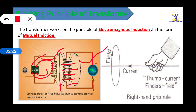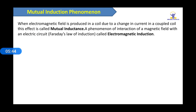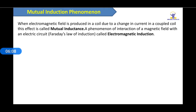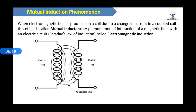The working principle is mutual induction. Mutual induction is when an electric field is produced in a coil due to the change in current in a coupled coil. When electric current flows, it starts due to mutual induction.